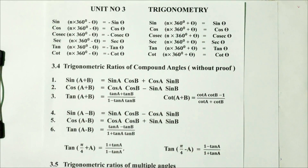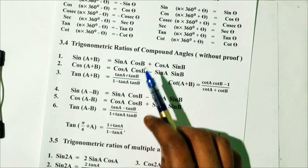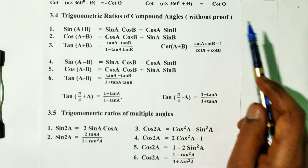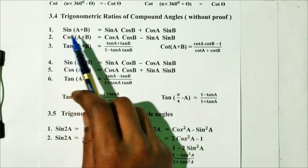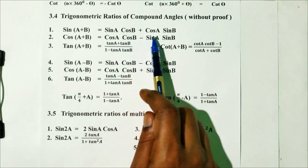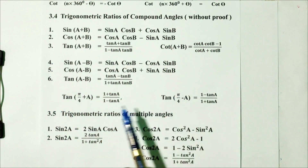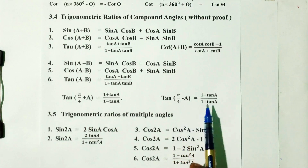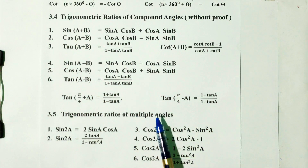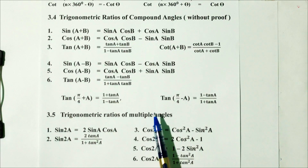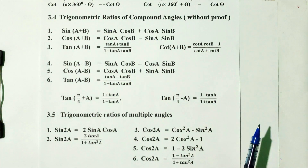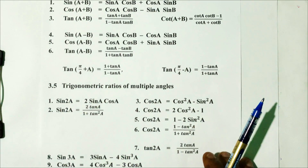Topic 3.4: Trigonometric ratios of compound angles — without proof. Practice this formula: sin(A + B) = sin A cos B + cos A sin B. Also, tan(π/4 + A) and tan(π/4 − A). Multiple choice questions on this topic are straightforward.